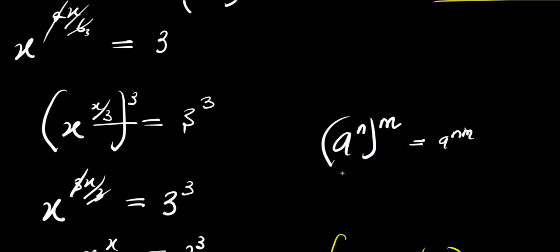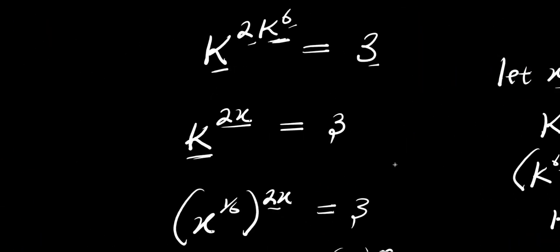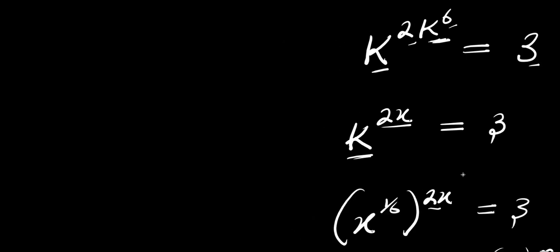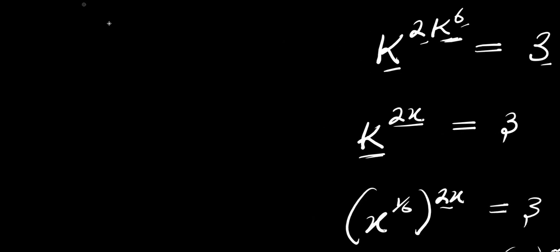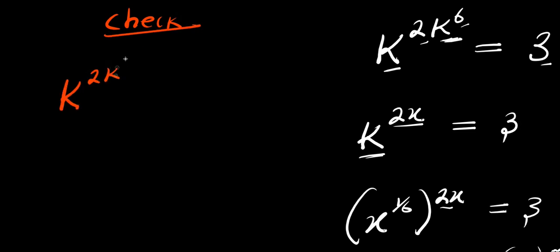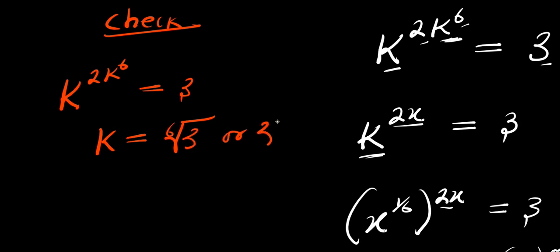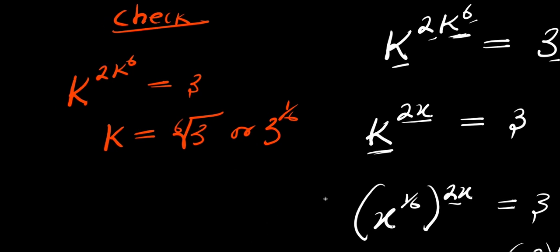So this is the solution for k. We can check: I have k power 2 times k power 6 equals 3, and k equals the 6th root of 3, or 3 power 1 over 6. From where we solved, we can easily verify this.